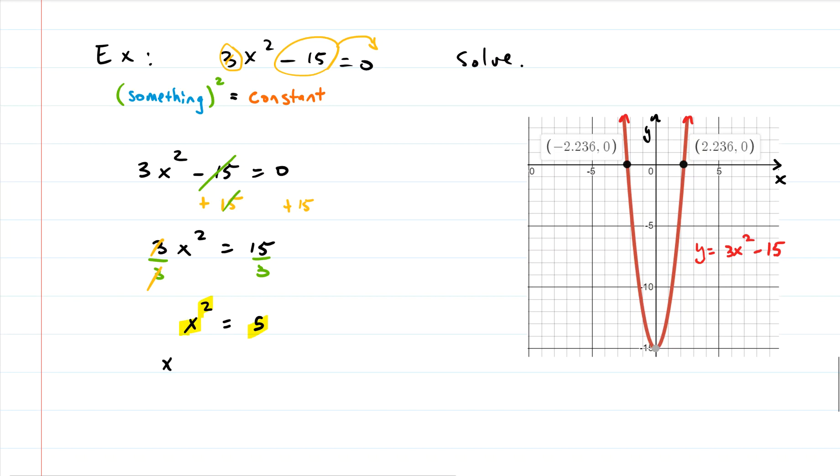So now what we can do is take the square root of both sides, which is what the square root property says you can do if your equation fits this something squared equals a constant form.